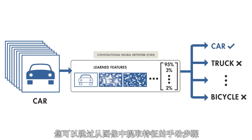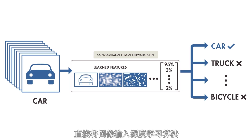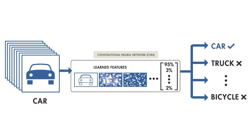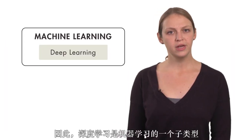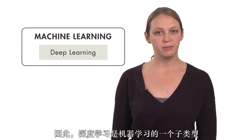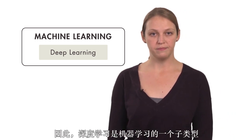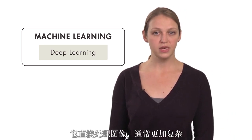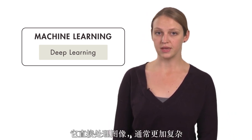On the other hand, with deep learning, you skip the manual step of extracting features from images. Instead, you feed images directly into the deep learning algorithm, which then predicts the object. So deep learning is a subtype of machine learning — it deals directly with images and is often more complex.